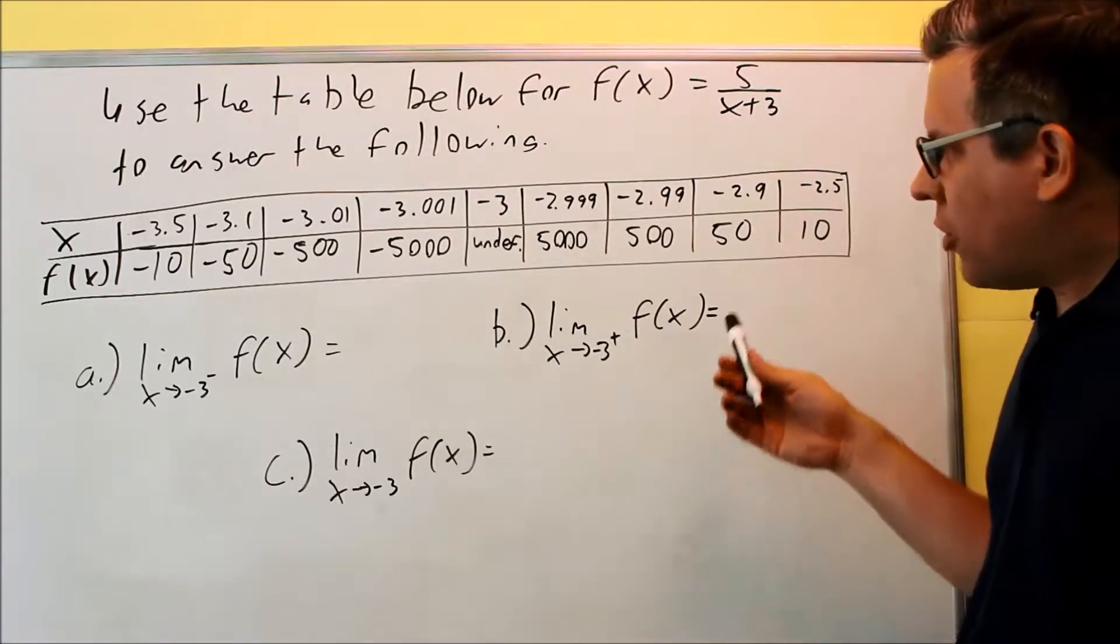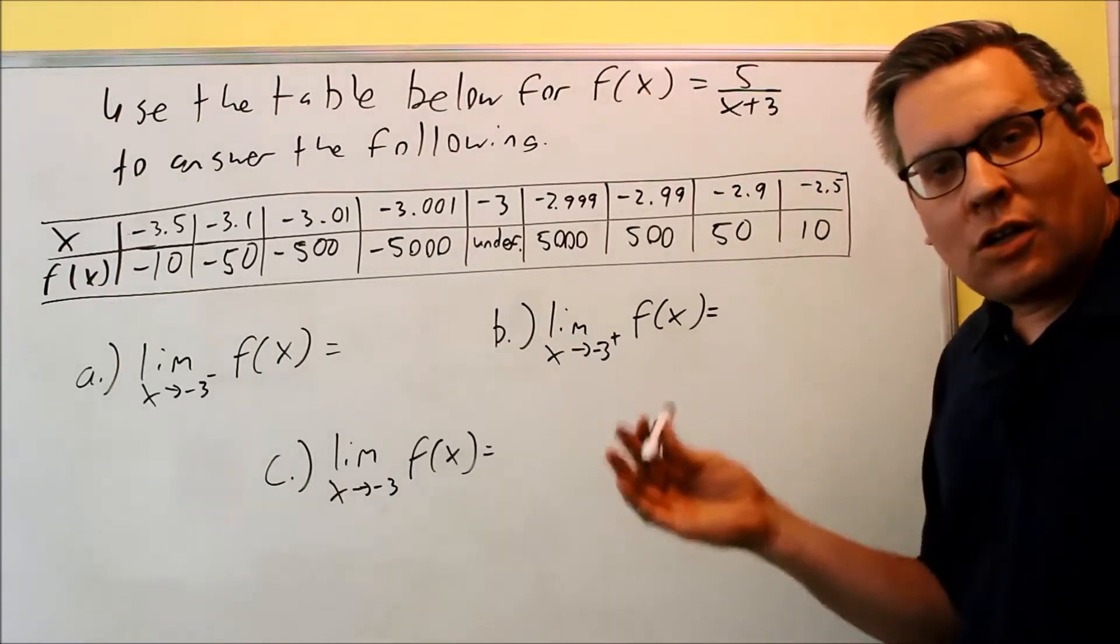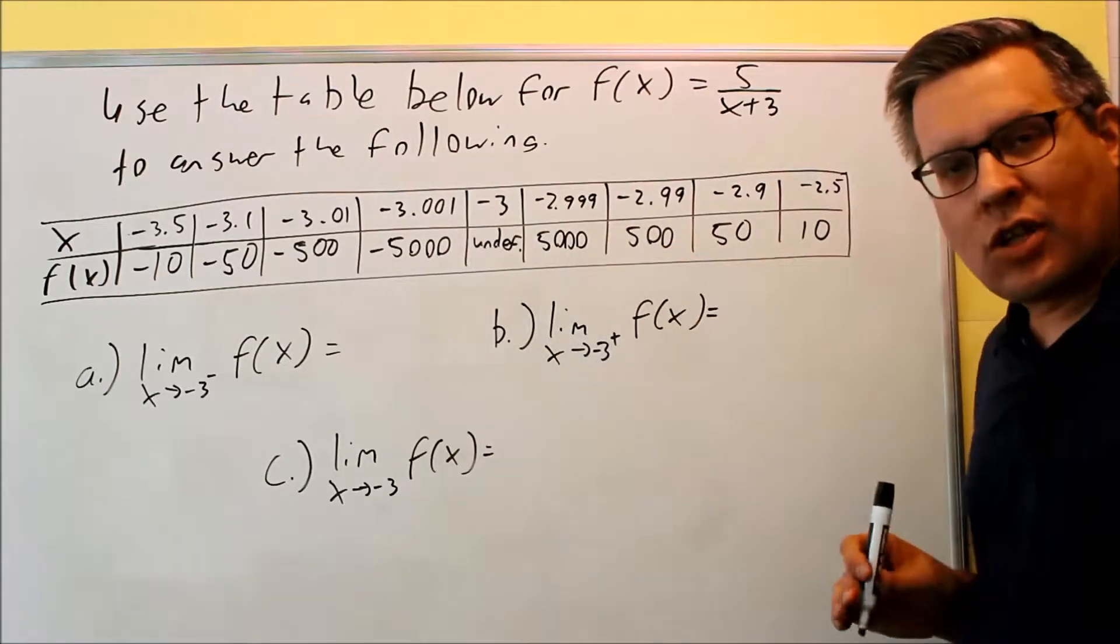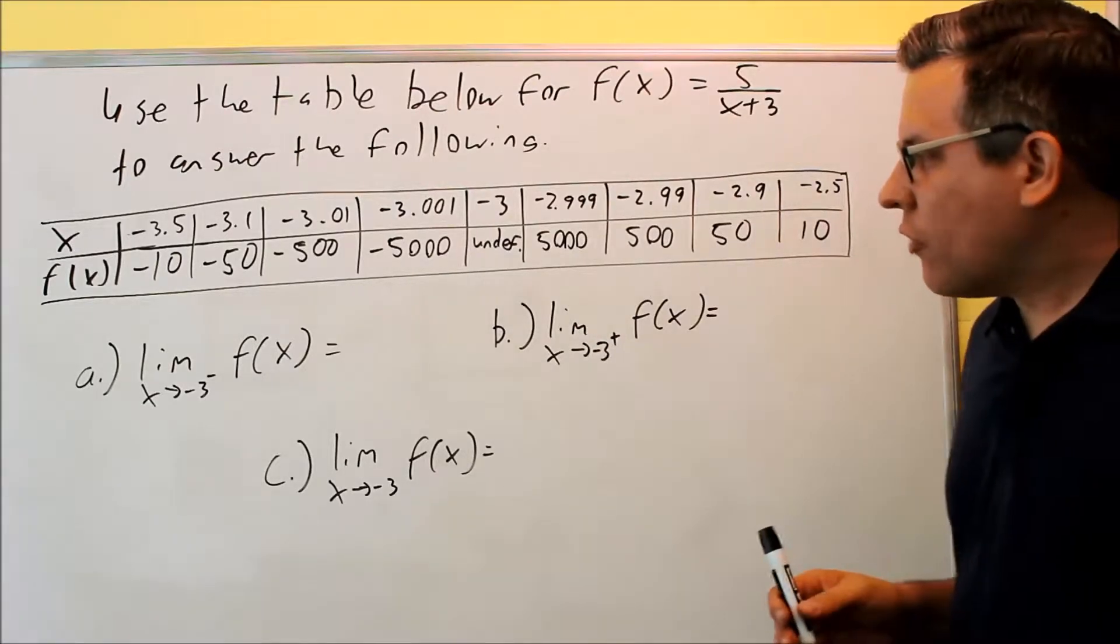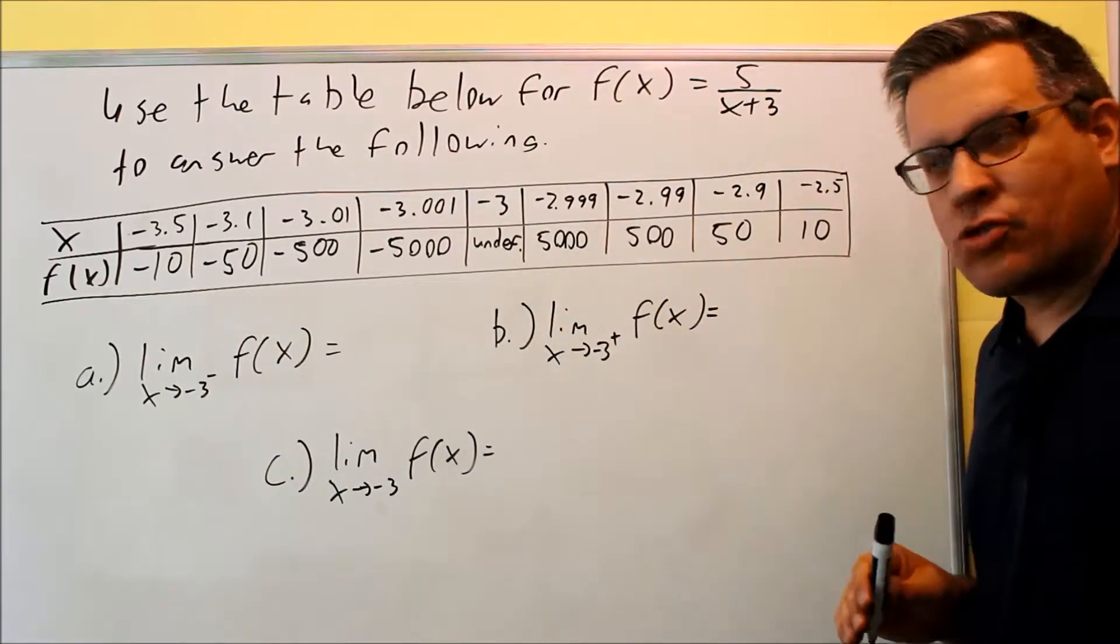Let's take a look at what's happening. So negative 3 is right here, and of course if I put negative 3 in there directly, I'm going to get 0 on the bottom—I'm dividing by 0, and so we know that's going to be undefined. However, if we're approaching it from the left and from the right, we do have some values it's going to be approaching.